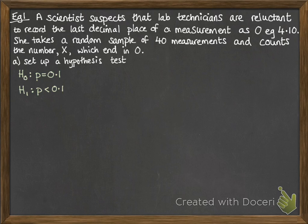The alternative hypothesis is that for a 0, the probability of it coming up as the last digit is actually smaller if people are reluctant to record that 0 in the last place. Under the null hypothesis, we have a binomial distribution with 40 trials and probability of success 0.1, X~Bin(40, 0.1).